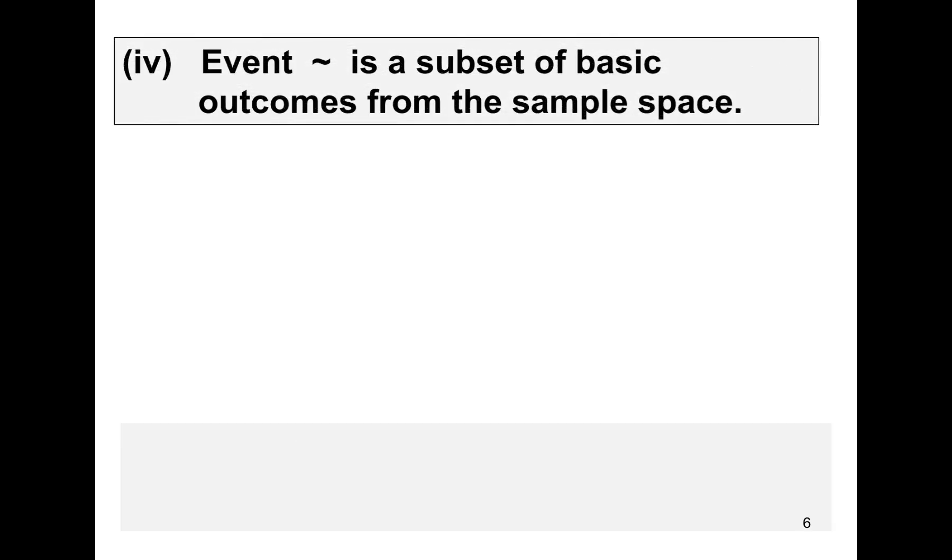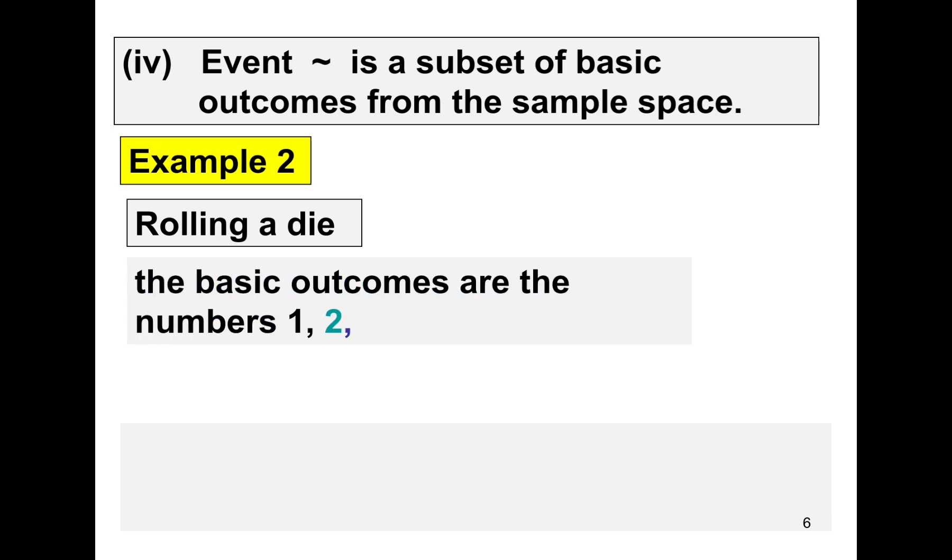Number 4, an event. An event is a subset of basic outcomes from the sample space. For our example, assume that we are rolling a die. So the basic outcomes are the numbers 1, 2, 3, 4, 5, and 6. Thus, our sample space, or the element of our sample space, are 1, 2, 3, 4, 5, and 6.